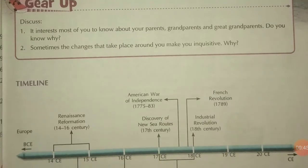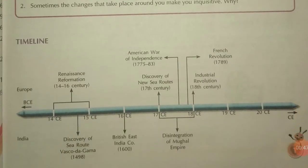Now here the timeline is given. For Europe, we are going to see from the 14th century to the 15th century. In the 14th century, Renaissance and Reformation took place, that is during the 14th to the 16th century.